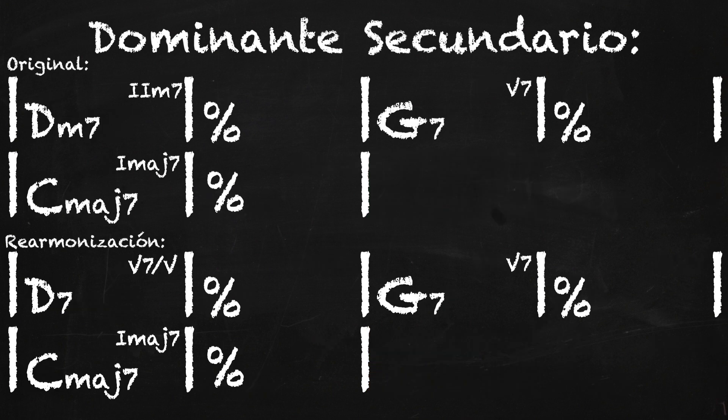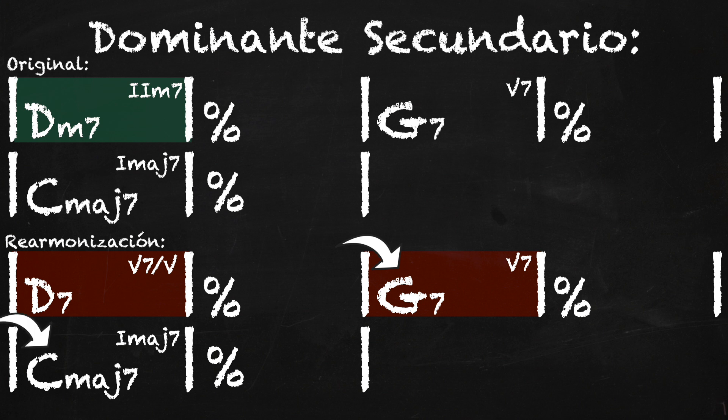En la siguiente parte de la armonización nos damos cuenta que en el tema original teníamos un Re menor 7 en dos compases, los cuales los cambié por un Re 7. Ahora, el Re 7 cumple una función de dominante para el Sol que viene, y el Sol 7 que viene va a resolver al Do. O sea, en esta oportunidad hicimos una cadena de dos dominantes para poder resolver al Do.